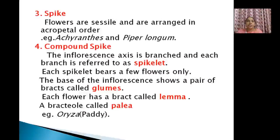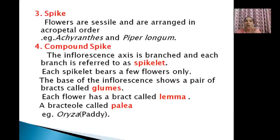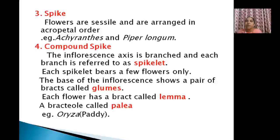Next is spike. In simple raceme and panicle, flowers are pedicelate, but in a spike, flowers are sessile — arranged in acropetal order. Examples are Achyranthes (kadaladi), Piper longum (tippali), and Amaranthus (cheera). Basal flowers are matured, upper flowers are younger, but they are all sessile — that is the key difference from simple raceme.